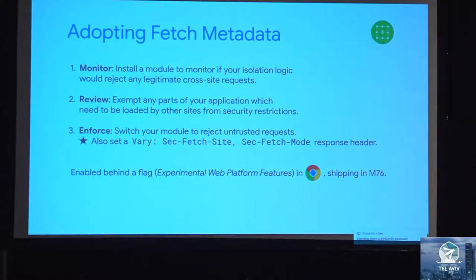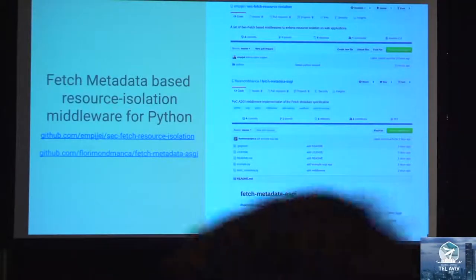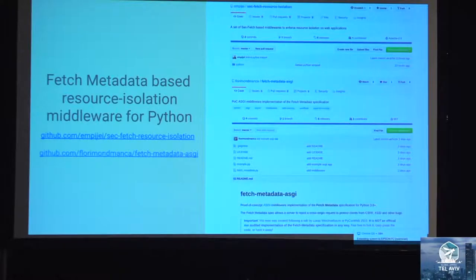Fetch metadata is shipping in Chrome in version 76. You can already play with it by enabling the experimental web platform features flag. There are also already two projects on GitHub providing proof-of-concept implementations for resource isolation-based middleware using fetch metadata. Give it a try, give us feedback — I'm super curious to hear what you think about the approach.